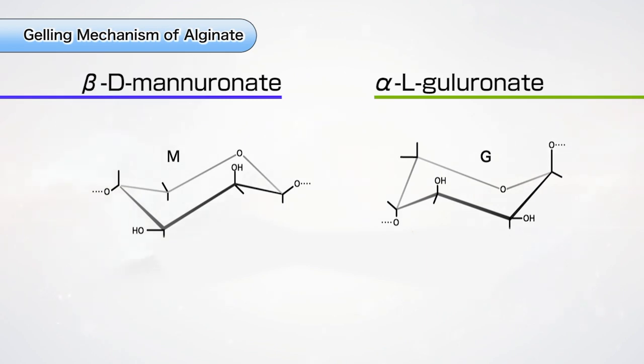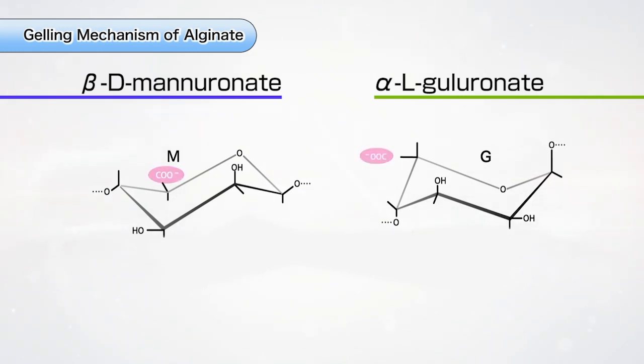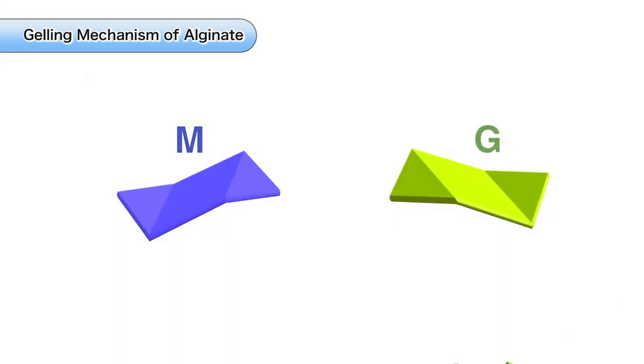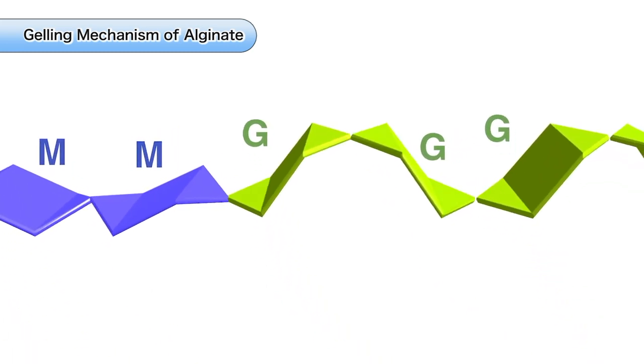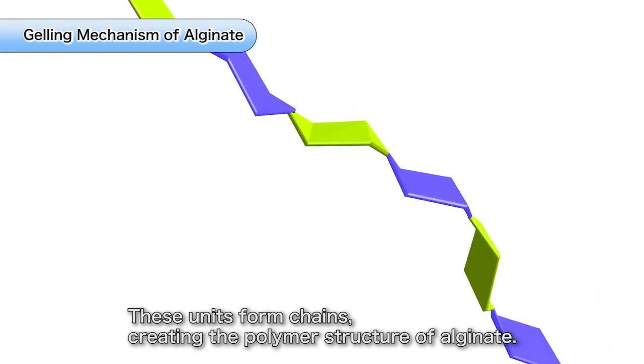Alginate is a combination of two uranic acids, manuronic acid and guluronic acid. Each unit of a uranic acid includes a negatively charged carboxyl group of high ion exchange capacity. These units form chains which create the polymer structure of alginate.